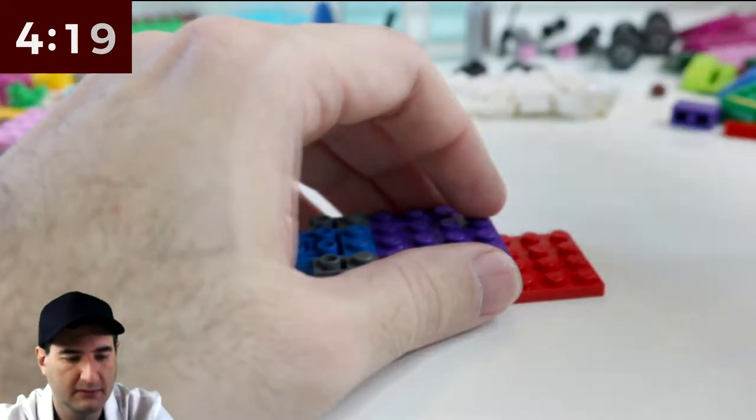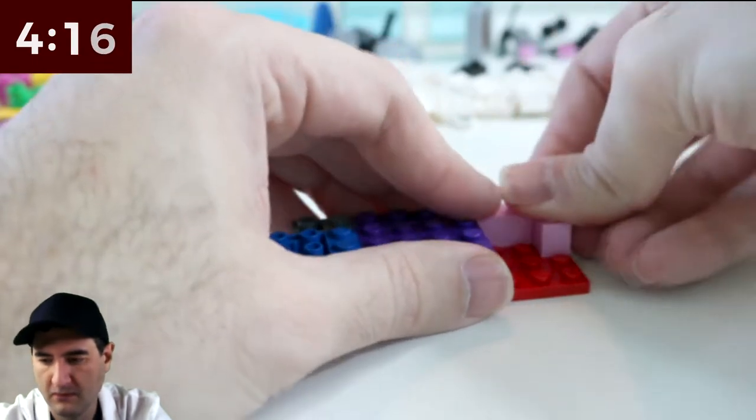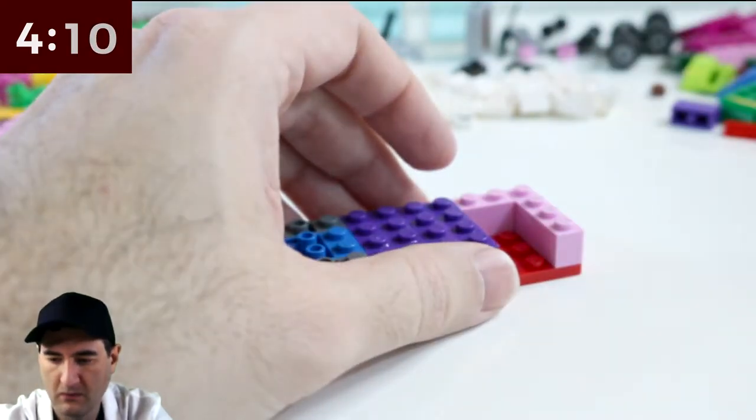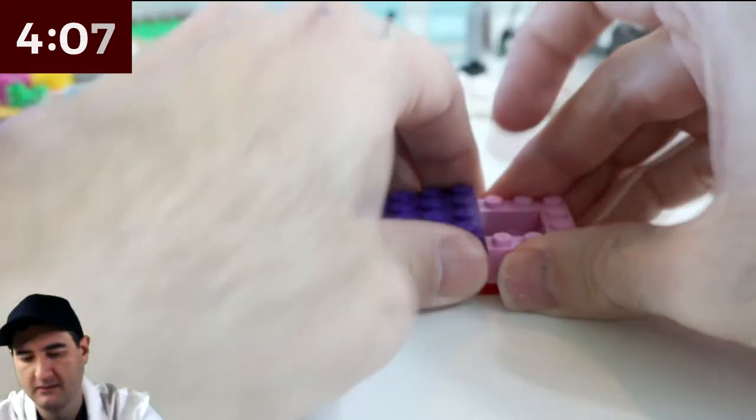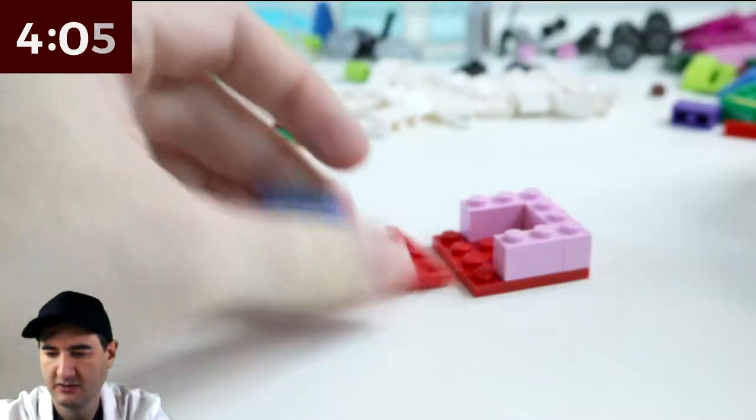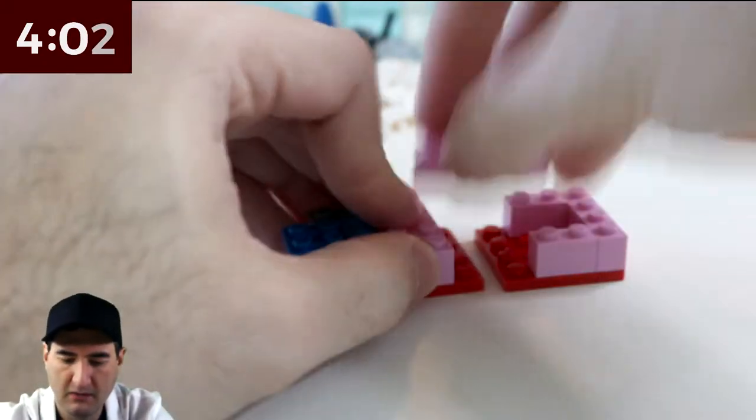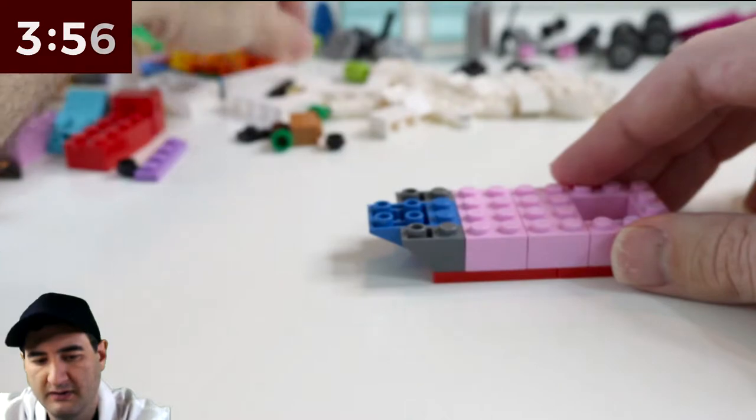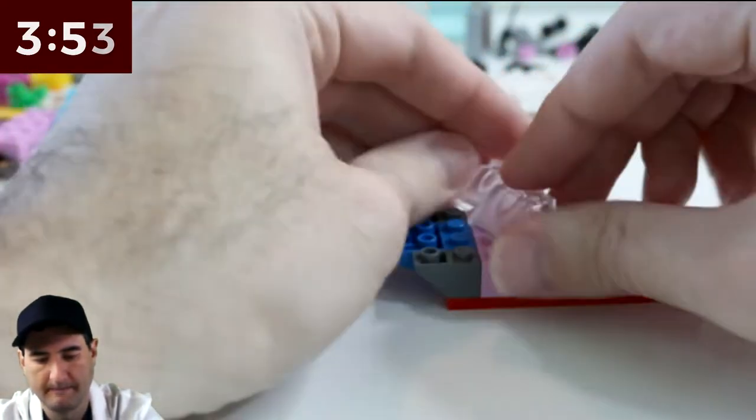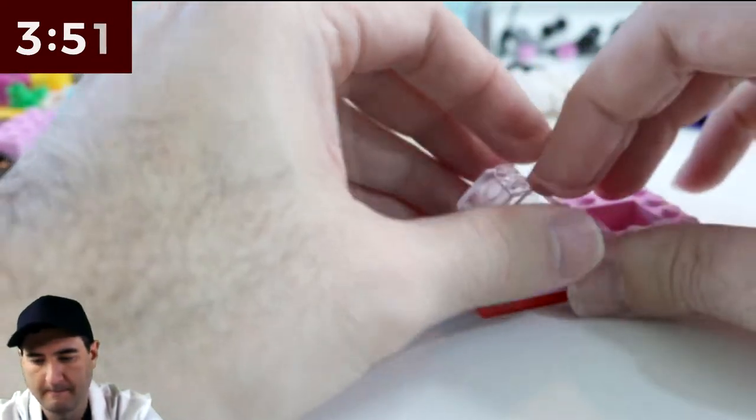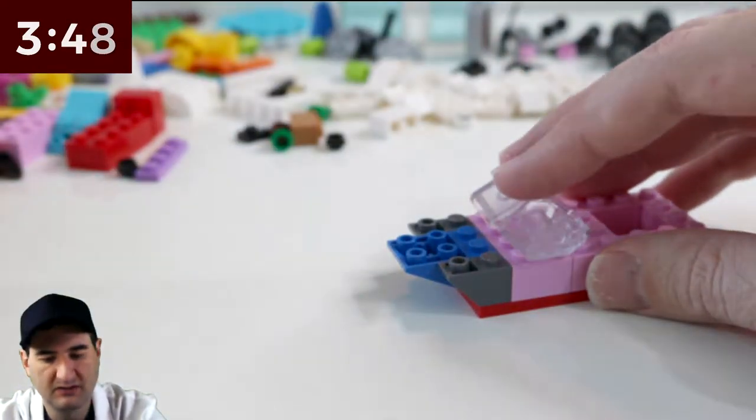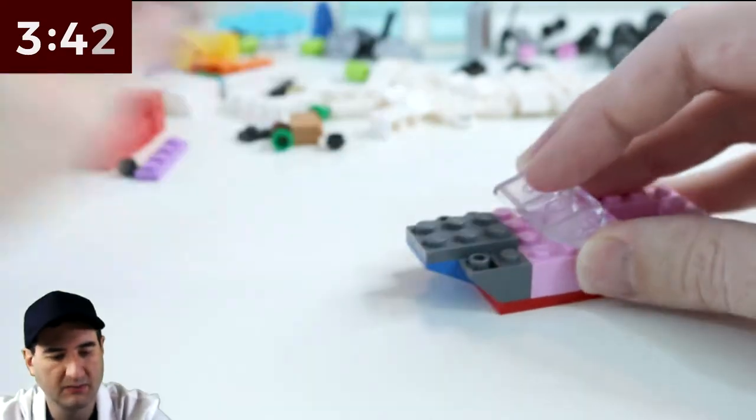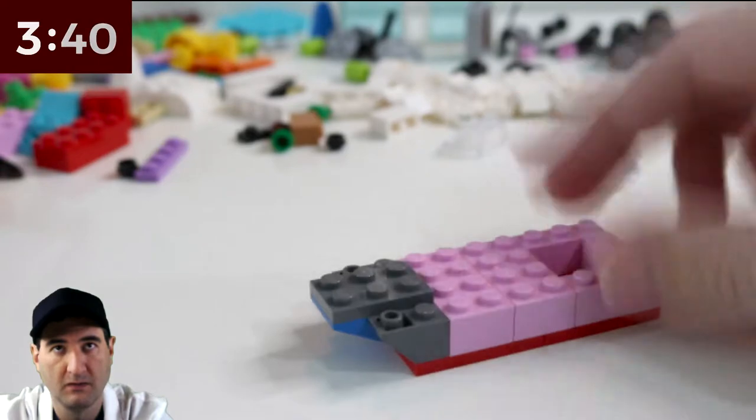So let's see. Maybe something like this. Let's trade out these colors. Something like that. Okay, then I want the windows. Maybe I need to cover these up. Yeah, something like that. You guys seeing what I'm doing?